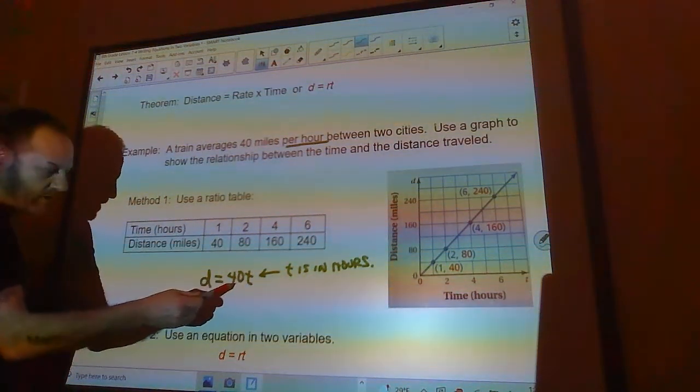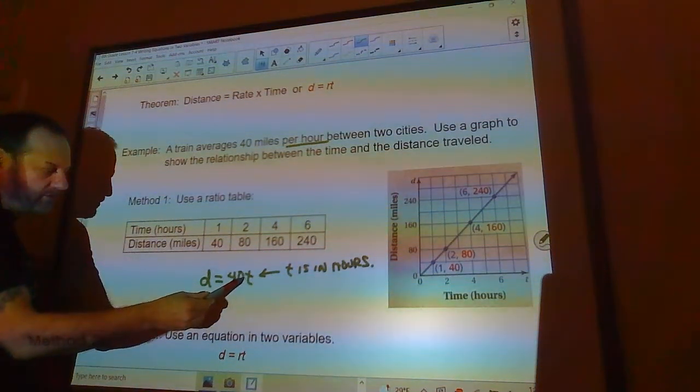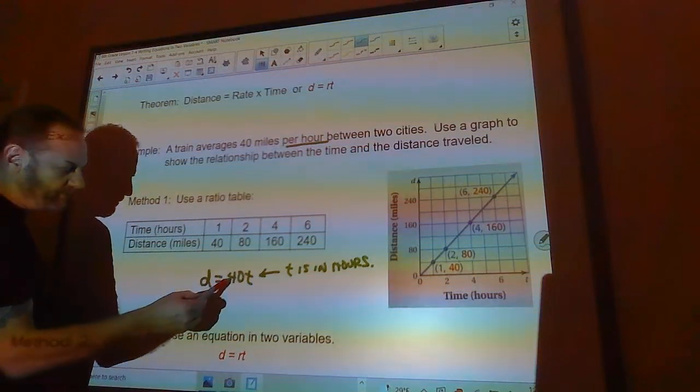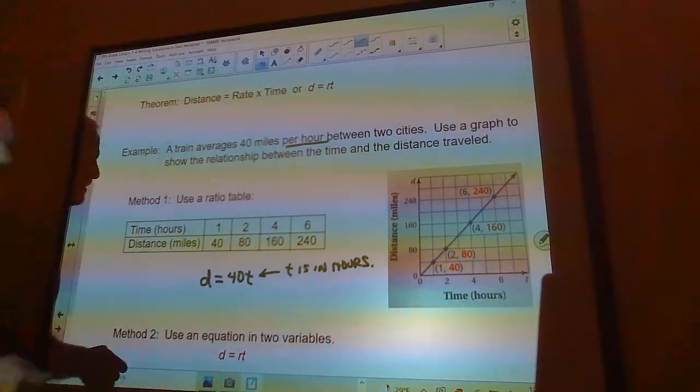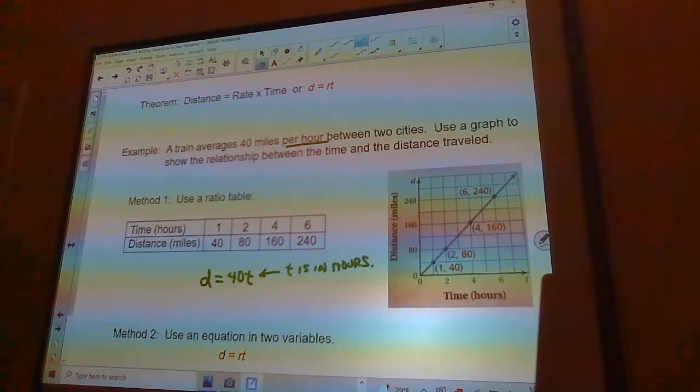So in one hour, I plug in one, I'm going to get one times 40 is 40. In two hours, I plug in two, two times 40 is 80. In four hours, four times 40 would be 160 and so on. So I get this nice little graph over here. That would be one way that I could do that.